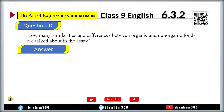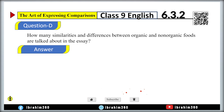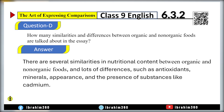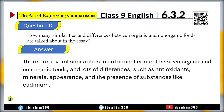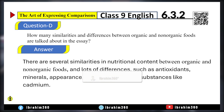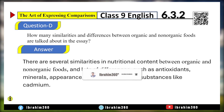Between organic and non-organic food, there are similarities as well as differences to identify and discuss. There are several similarities in nutritional content between organic and non-organic foods. There are also a lot of differences, such as antioxidants, minerals, and the presence of substances like cadmium.